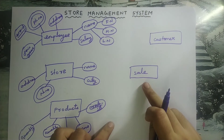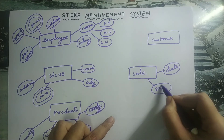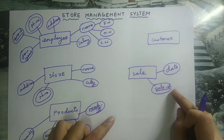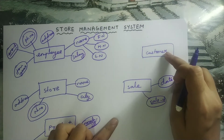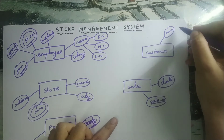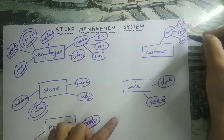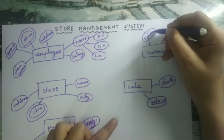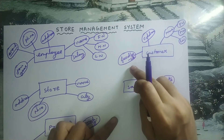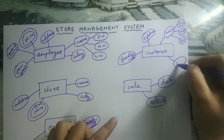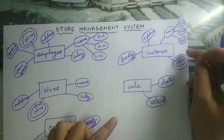Next let us see the attributes of the sale entity. The date of sale can be one attribute, then sale ID — I should underline sale ID because it is a primary key; for every sale there will be a unique ID. Next let us look into the attributes of customer. Customer will have a name, and name is a composite attribute that can be further divided as first name, middle name, and last name. Next, customer will have an address, then customer feedback, and also a phone number which must be written inside a double oval because it is a multi-value attribute — a customer can have more than one phone number.